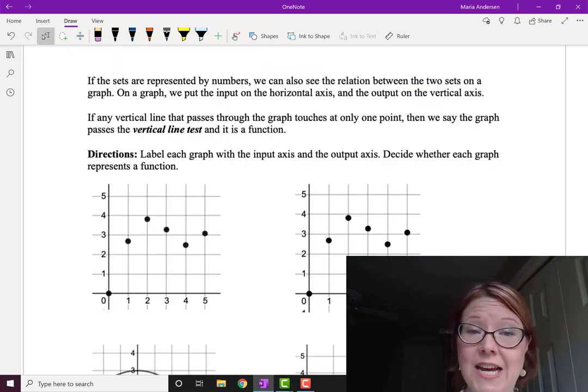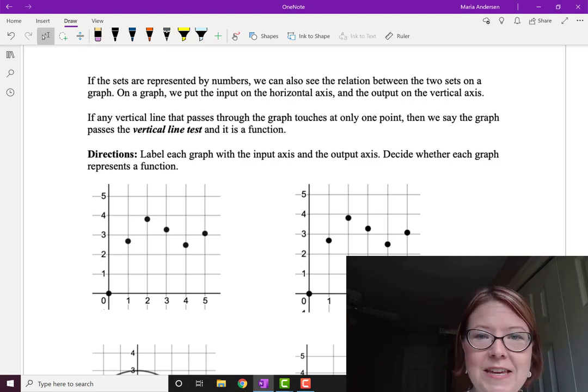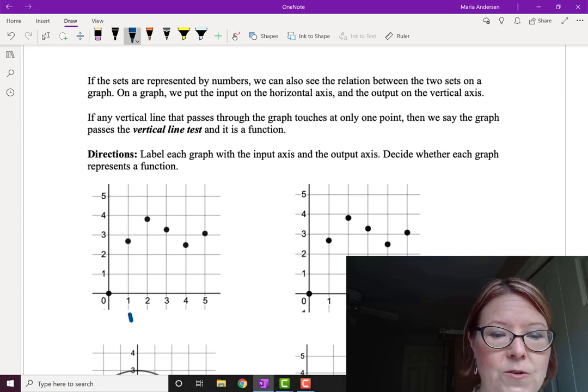If our two sets are both represented by numbers, we can see the relation between the two sets by looking at a graph. On the graph, the input is always the horizontal axis and the output is always the vertical axis. So let me go ahead and label that on the first graph.